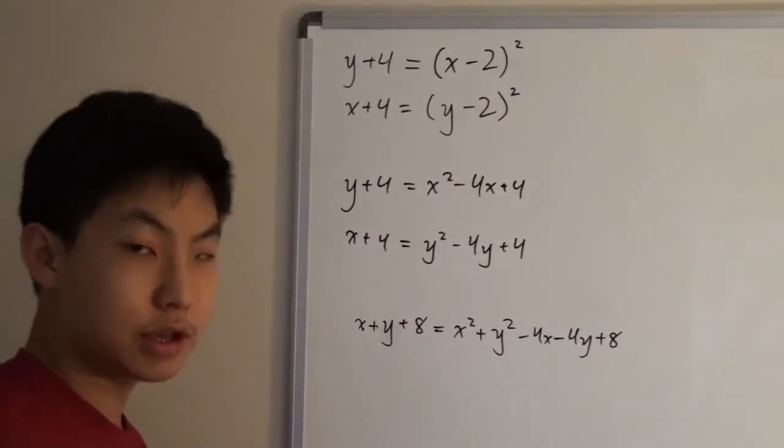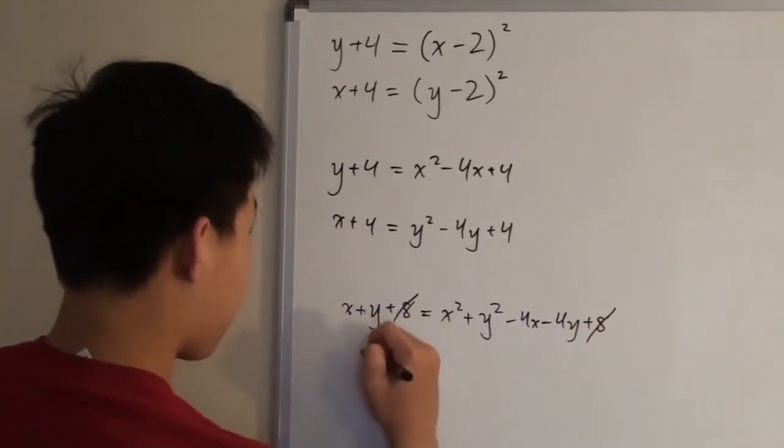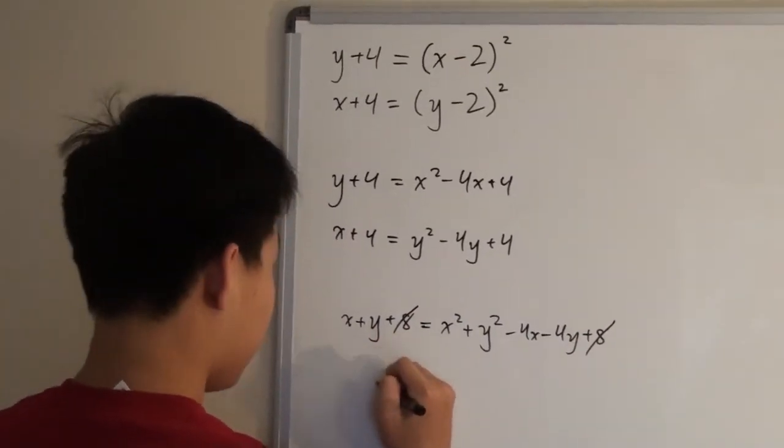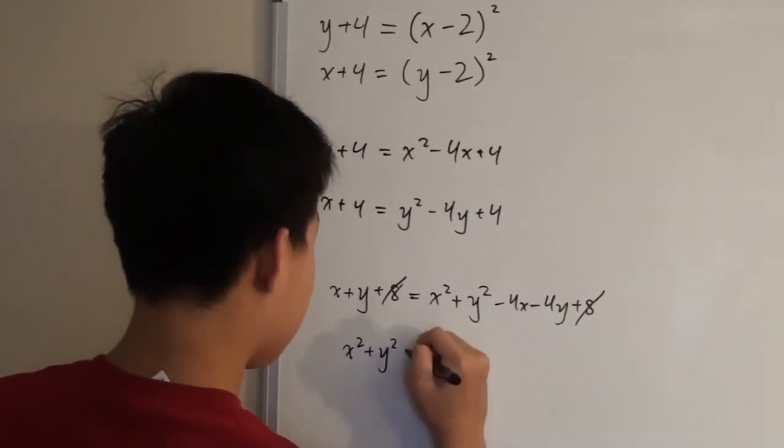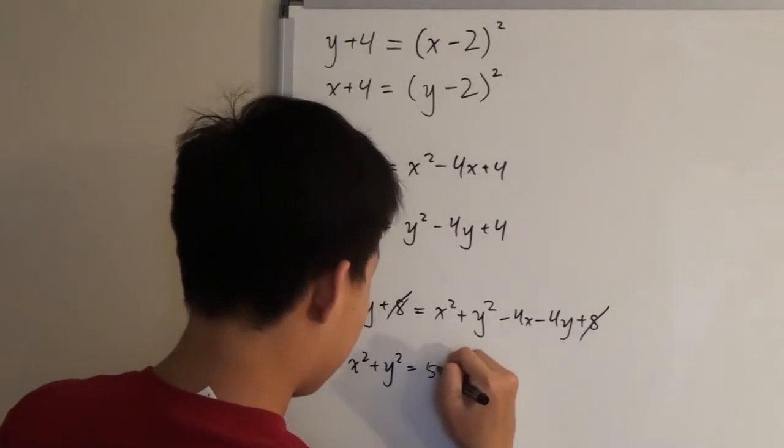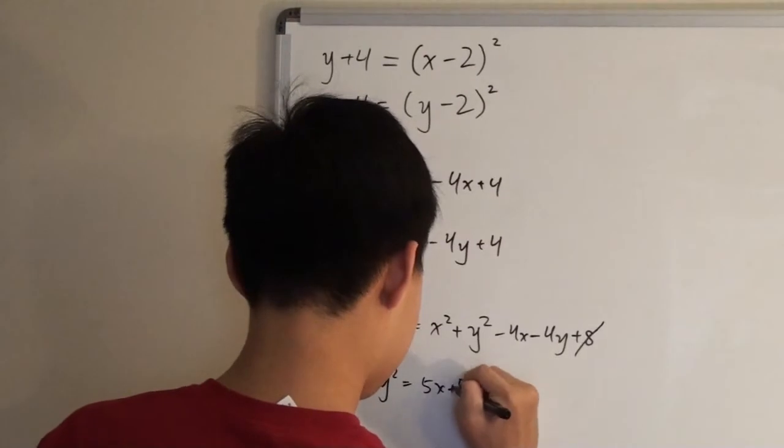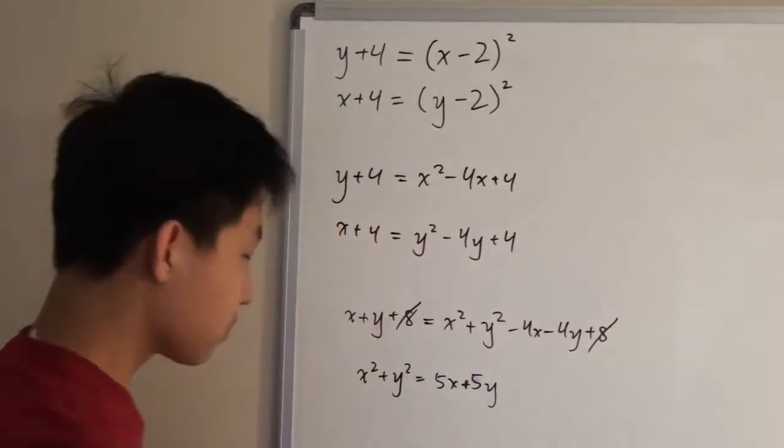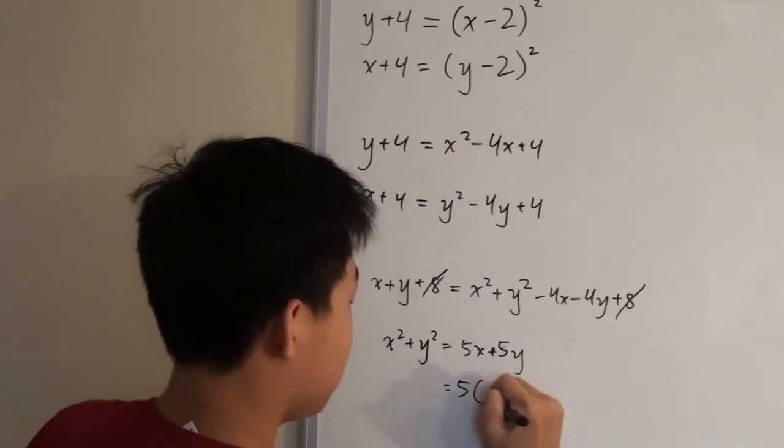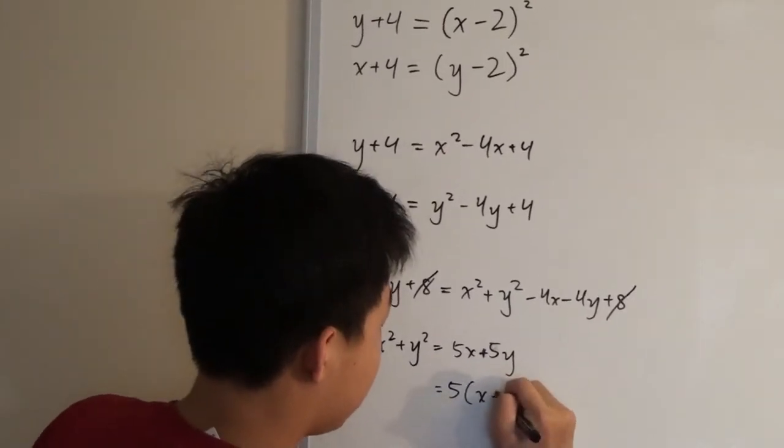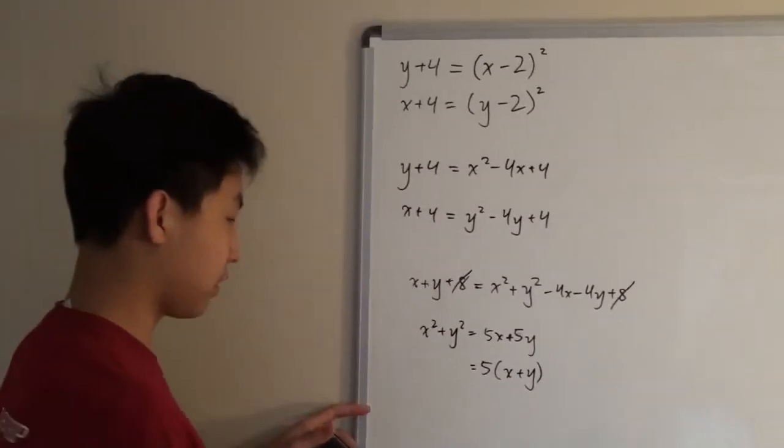And now we can simplify this, and this would give us x squared plus y squared is equal to 5x plus 5y. And this can also be equal to 5, you can factor out the 5 from 5x plus 5y.